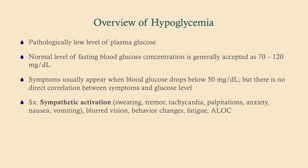So hypoglycemia — very simple — is a low glucose level. Generally we're talking below 70 milligrams per deciliter. Your body has a really good way of regulating glucose; it's pretty tightly regulated. So even if you're going on a fast, you should not be going below 70 mg/dL because your body is capable of gluconeogenesis. The normal level is between 70 and 120 fasting, and symptoms usually appear when blood glucose drops below 50.